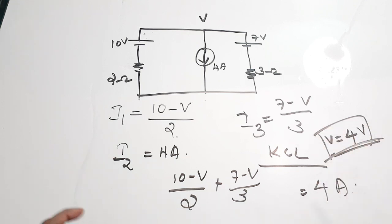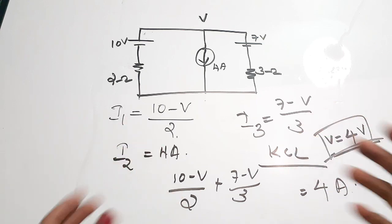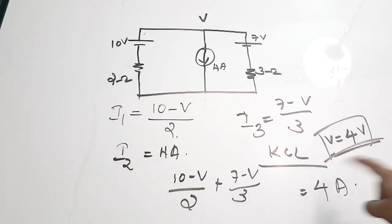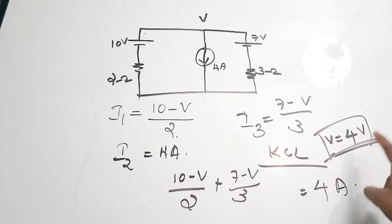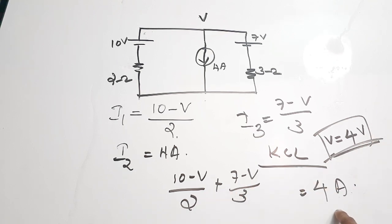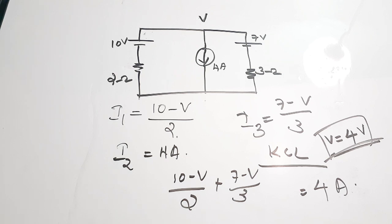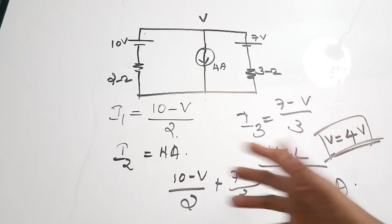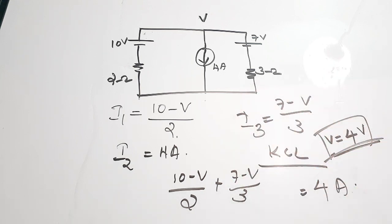The voltage obtained is 4 volts, and substituting 4 volts back into the equation confirms 4 amperes. These are some tricks you can apply in solving nodal analysis questions — a very important topic in network theory and electronics. Many people find it difficult, so I hope you found these tricks useful. If so, please give it a thumbs up, share it with your friends, subscribe to the channel, and thanks for watching.